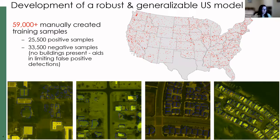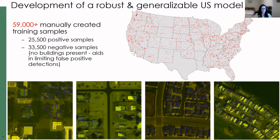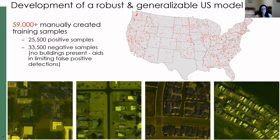Over the course of about five years for the U.S., we have close to 60,000 training samples and developed a really generalized model we call the Global U.S. model. As an example, for the state of Alaska — our last delivery — we didn't have any training samples from Alaska in that model, but it still performed really well because we had taken the time to develop a robust and generalizable training dataset based on the other deliveries. We're really glad to be at that point. That initial time investment to get a really high-quality training set is now paying off.